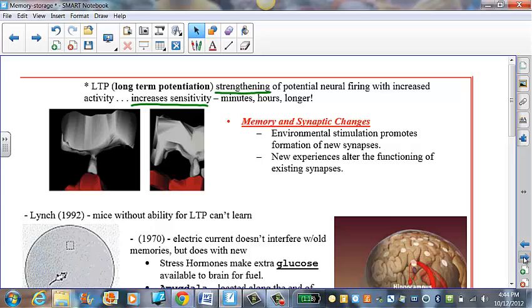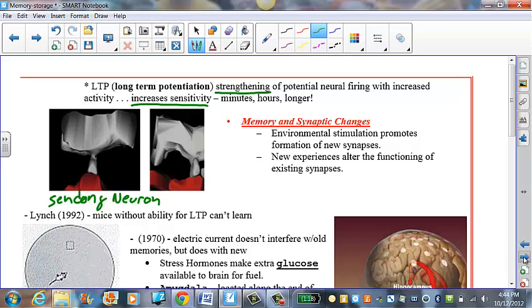And it's easy for me to see on the computer, but it's a little bit harder for me to see on the screen. But we're going to see the sending neuron is down here. And that neural signal is traveling this way. And the receiving neuron is here.